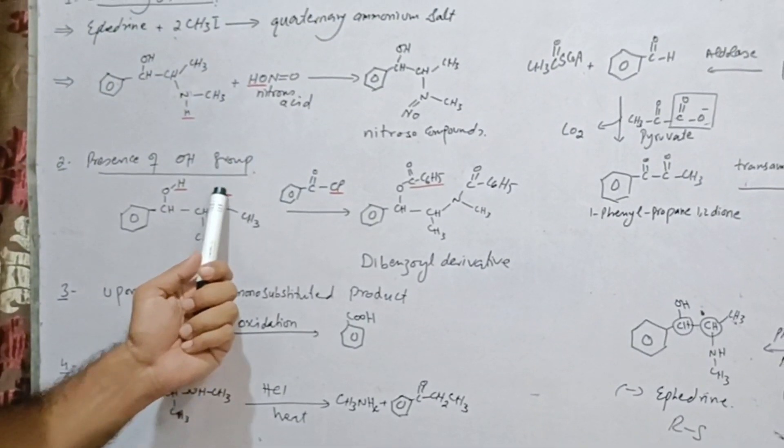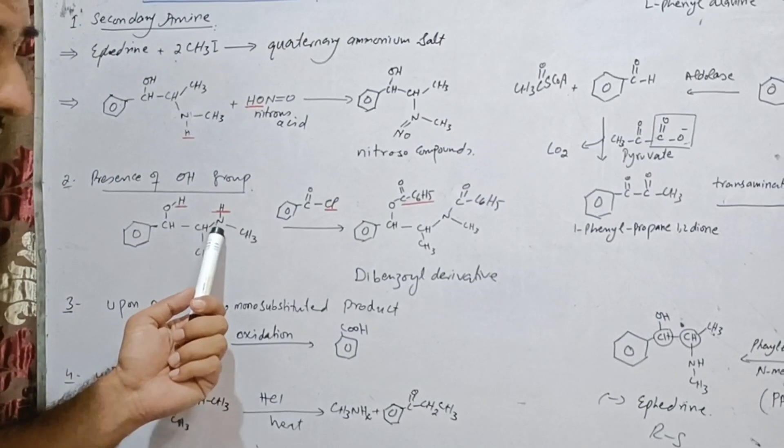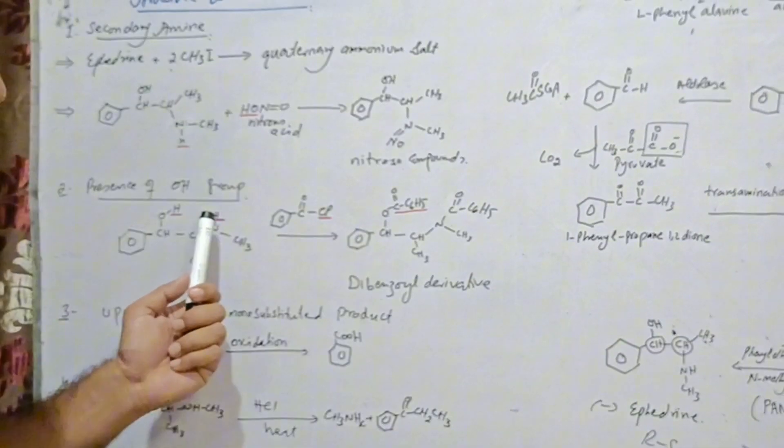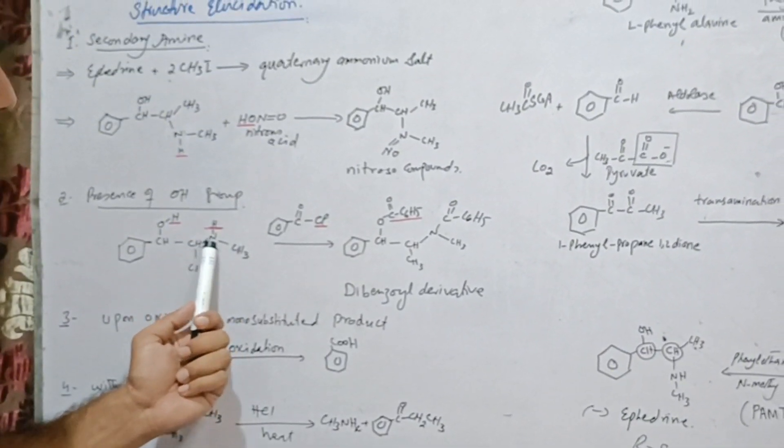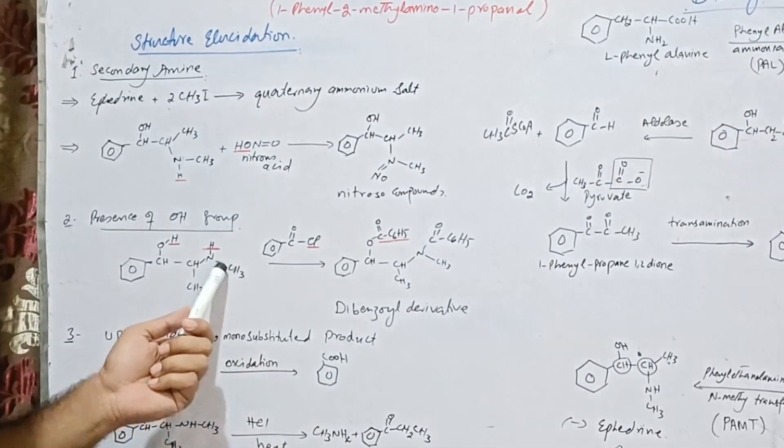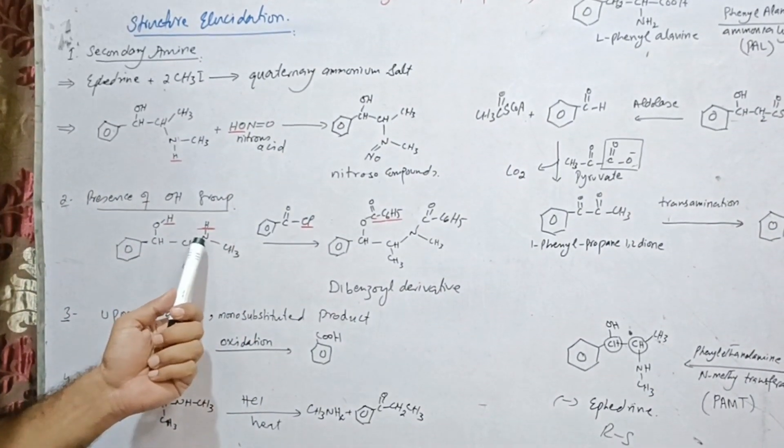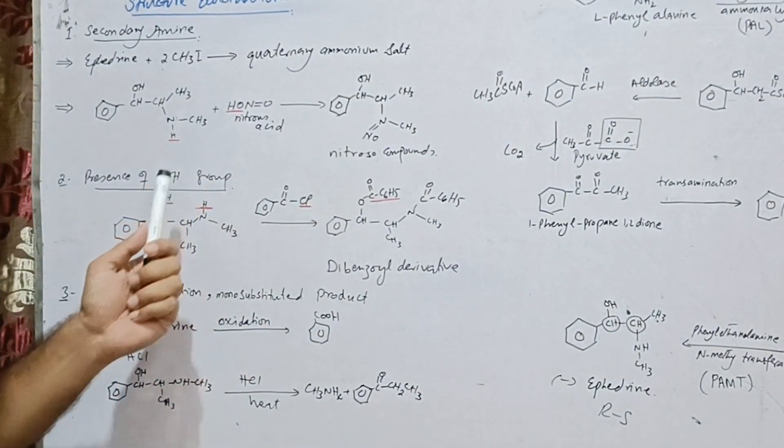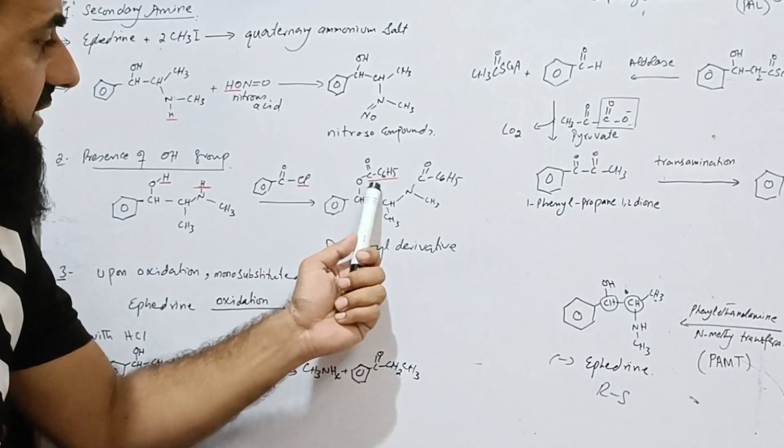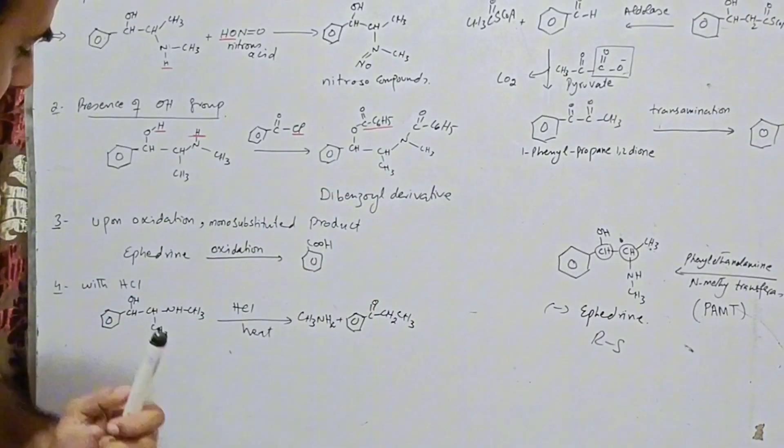As there is an NH group also present in this ephedrine, so benzoylation also occurs here with nitrogen. So we get dibenzoyl derivative. In previous two tests, we have confirmed that an NH group is present. So here we find that OH group is also present as dibenzoyl derivative is obtained.